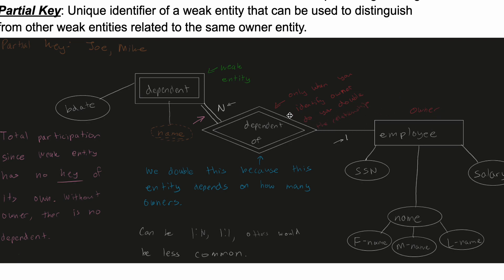We have our double right here. We double this because this entity depends on how many owners we have. So we can have one or more than one, but we can only have dependents of N many, and they only depend on our employee. So N many dependents depending on one employee.